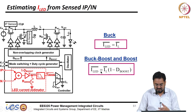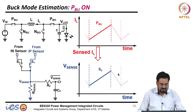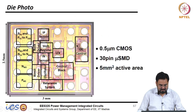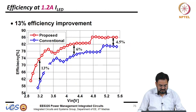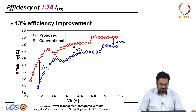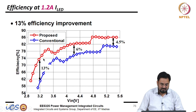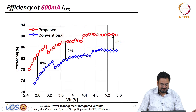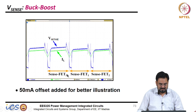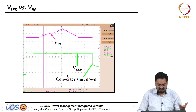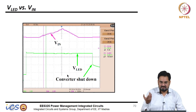After sensing, you scale by multiplying by (1 minus d) for the boost ratio. In terms of results: at 3.2 volts, mostly in boost mode, you get a 13 percent efficiency improvement, and in buck mode about 6 percent — so 4.5 to 13 percent improvement in efficiency overall. The accuracy is plus or minus 2.8 percent at different current levels, and most of the time the accuracy requirement is less than 5 percent, so it is within the acceptable range.